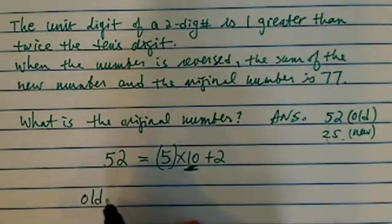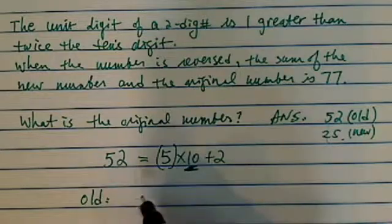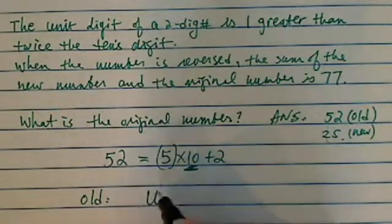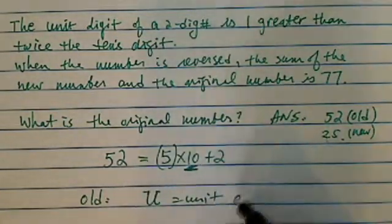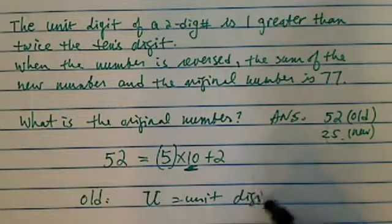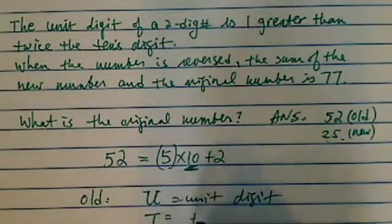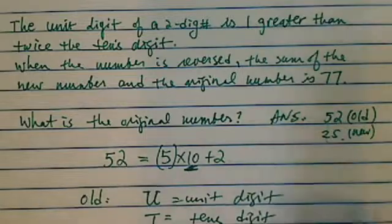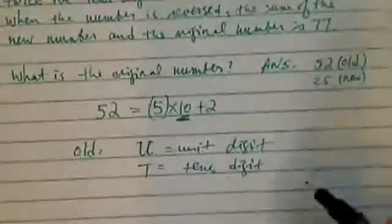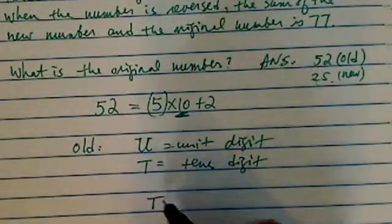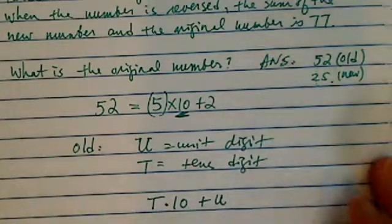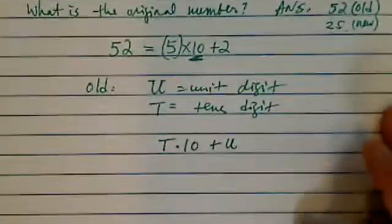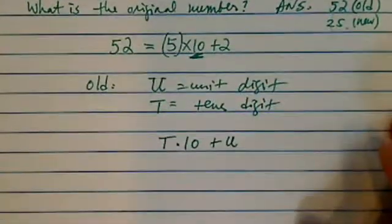Our old number's digits are: U is the unit digit and T is the tens digit. So our old number becomes T times 10 plus U. Now from there, let's get the equations.